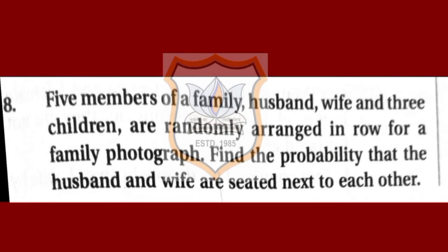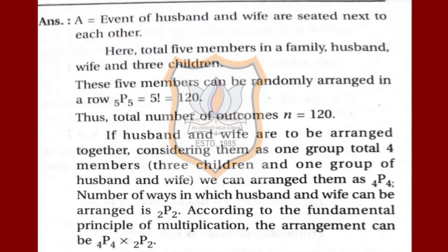Let's solve question number 8: five members of a family — husband, wife and three children — are randomly arranged in a row for a family photograph. Find the probability that the husband and wife are seated next to each other. Let us define event A: husband and wife are seated next to each other.